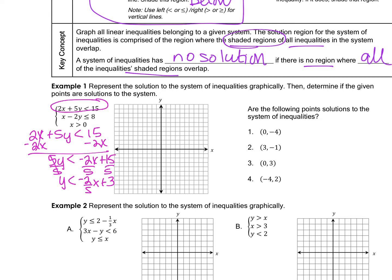Graphing this first inequality: the y-intercept is 3, and the slope is -2/5, so I go down 2 and right 5 to plot points across the whole graph. Since there's no equal sign under the inequality, it's a dotted line, meaning it does not include the points on this line.